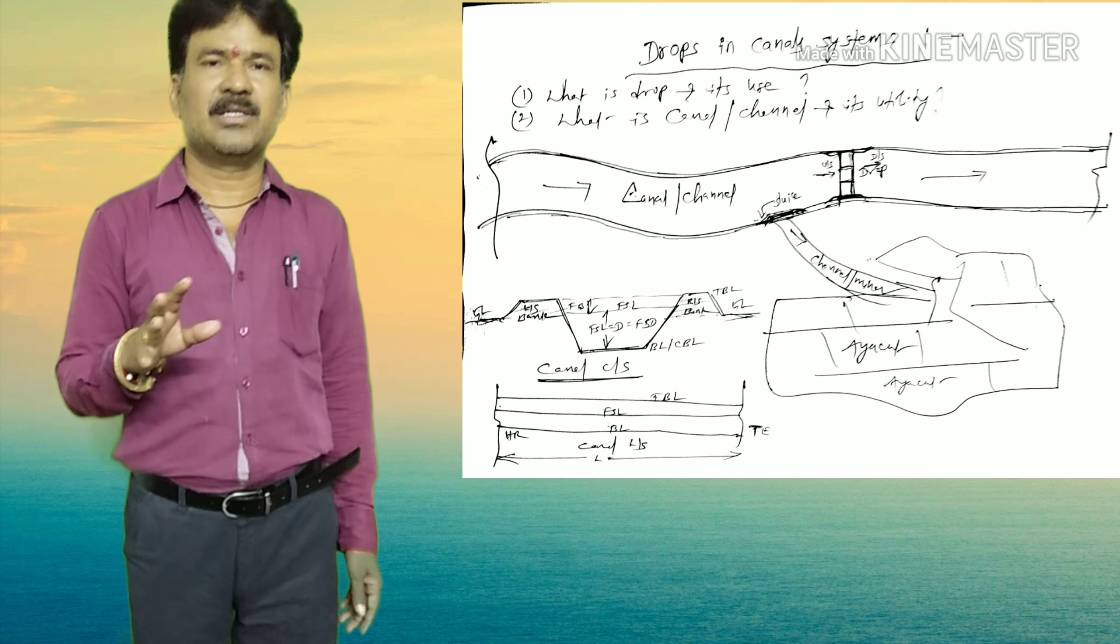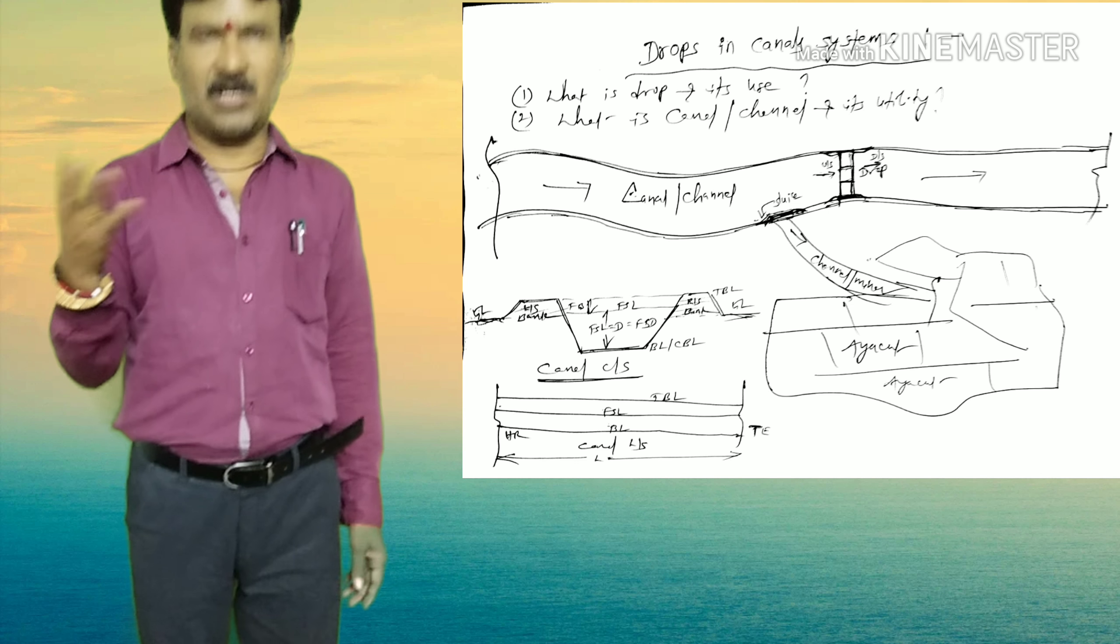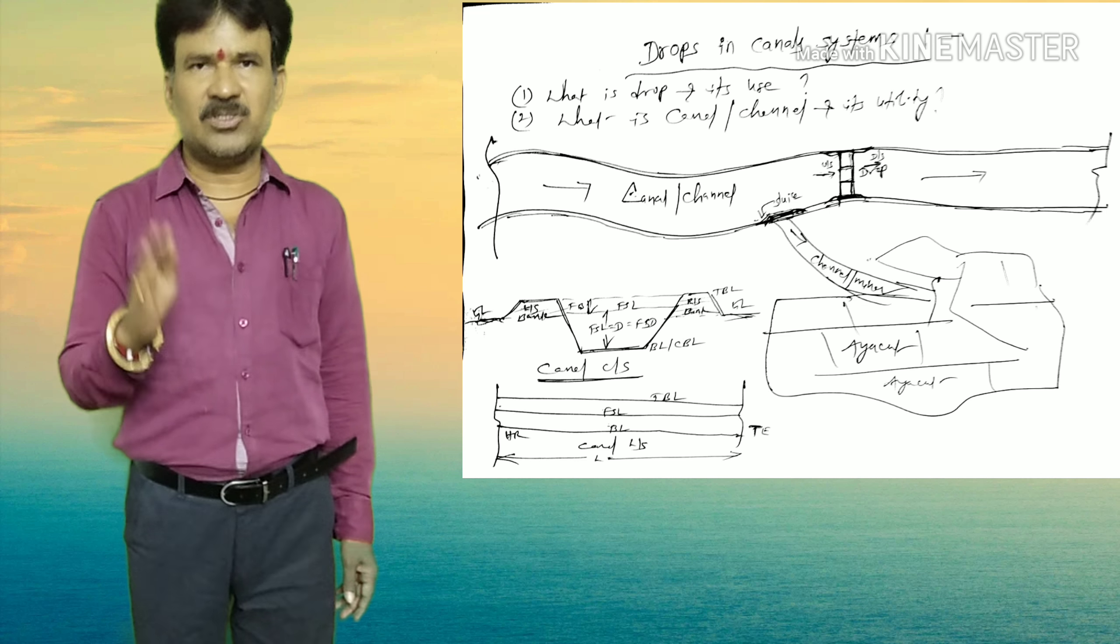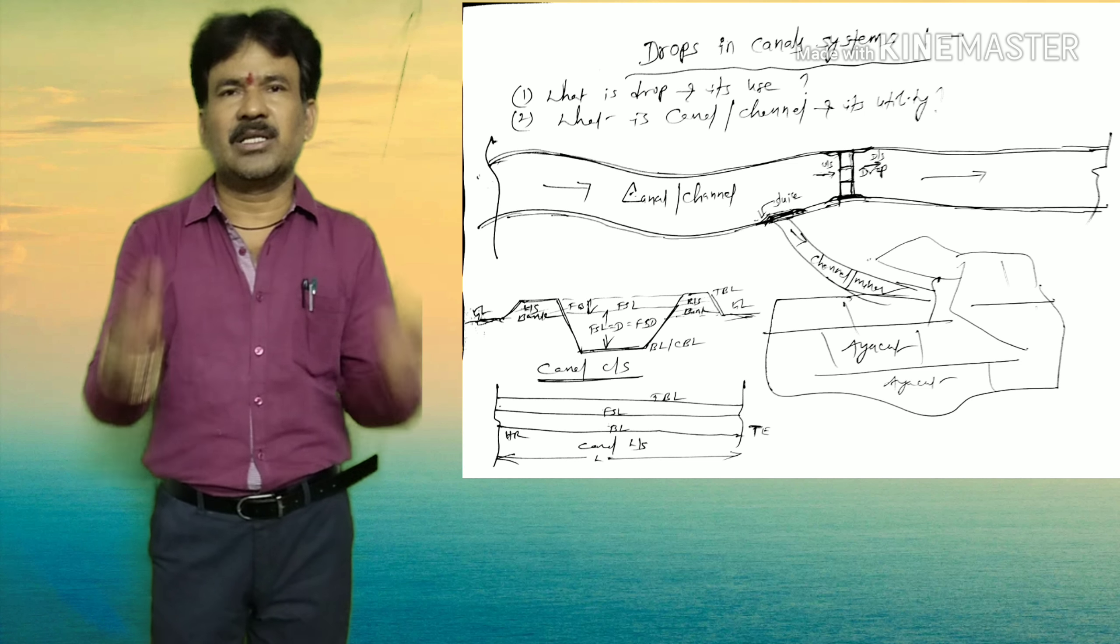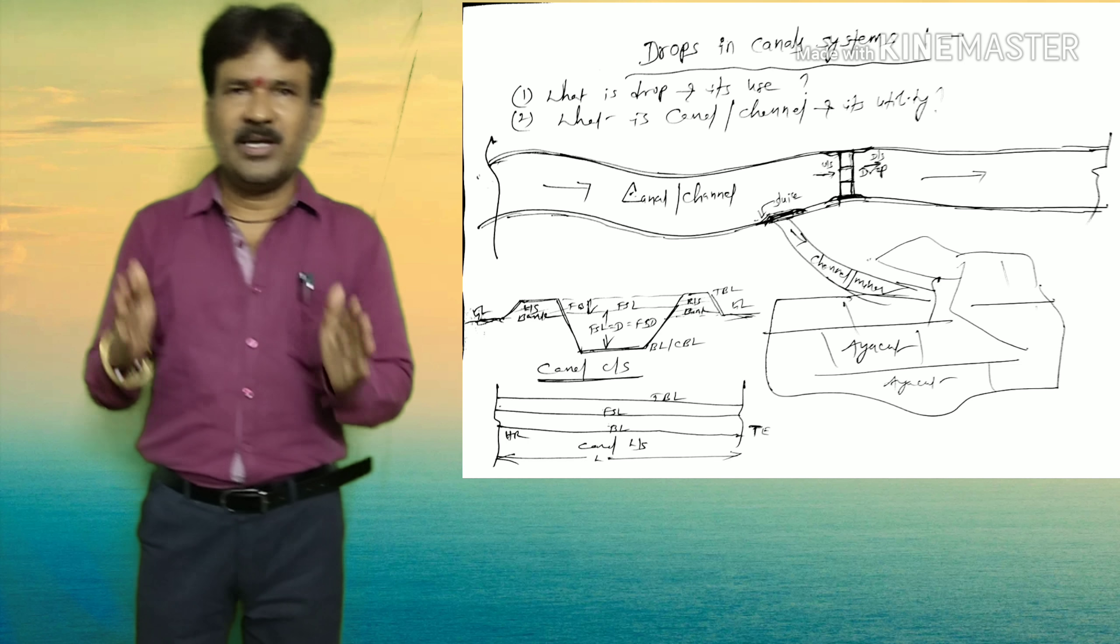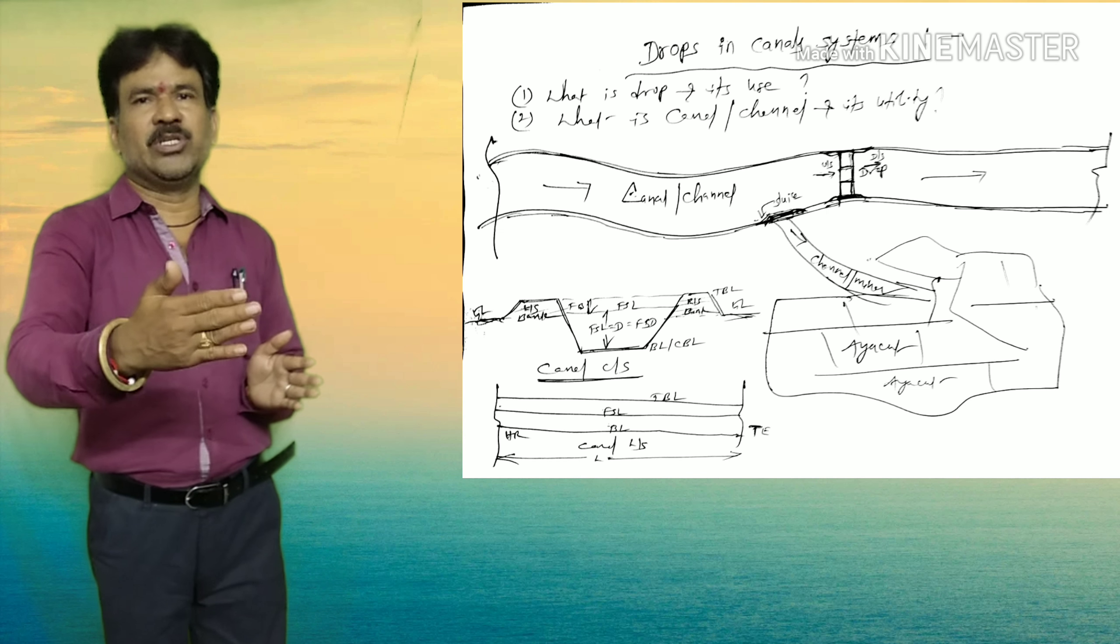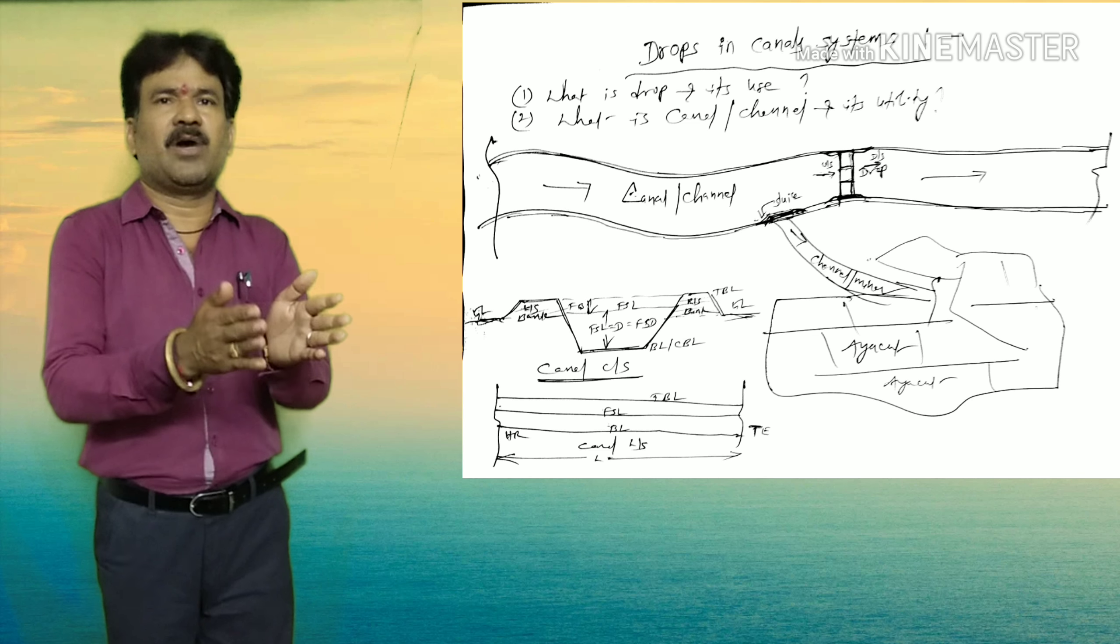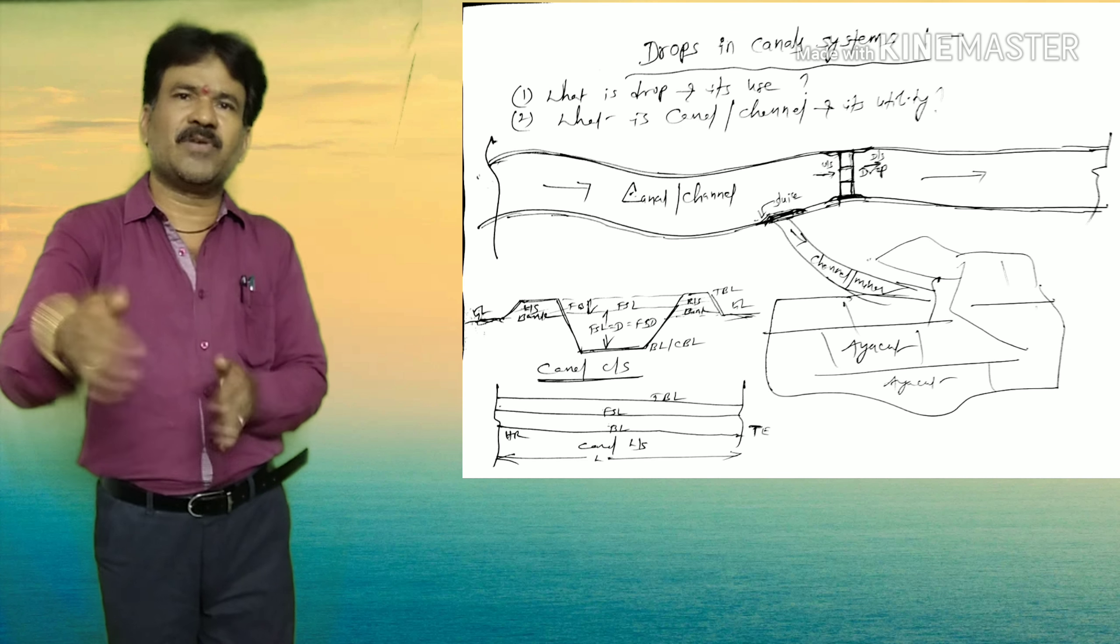A drop is nothing but a CC structure or masonry structure or RCC structure without shutters. We construct drops generally across the canal system, below the sluice, to head up the water, so as to send the water to the sluice for irrigation.